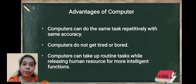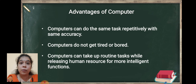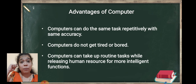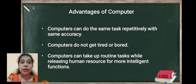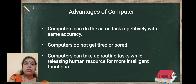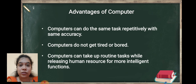Next point is advantages of computer. Computers can do the same task repeatedly with the same accuracy — as we have seen in the characteristics, computer is reliable and its accuracy is very high. Computers do not get tired or bored — we can do the same task repeatedly for many times. Also, computers can take up routine tasks while releasing human resources for more intelligent functions — meaning computers can replace humans for repetitive work.